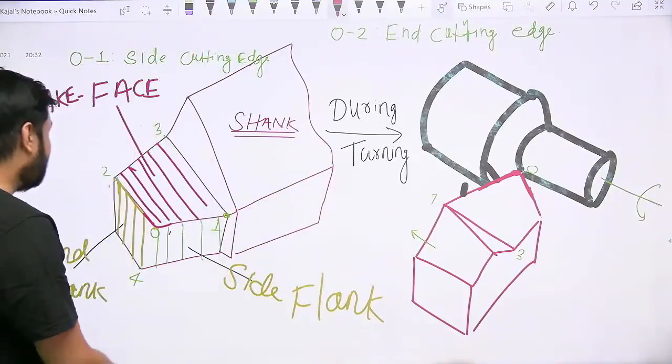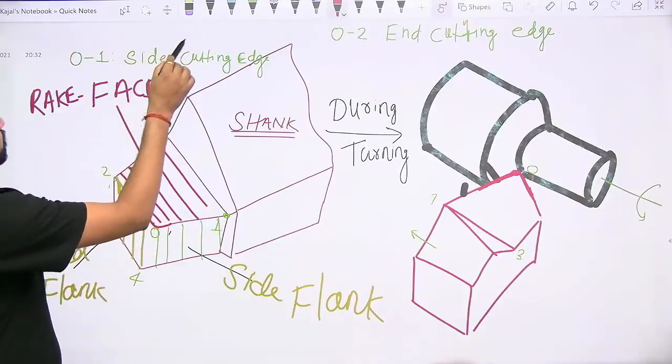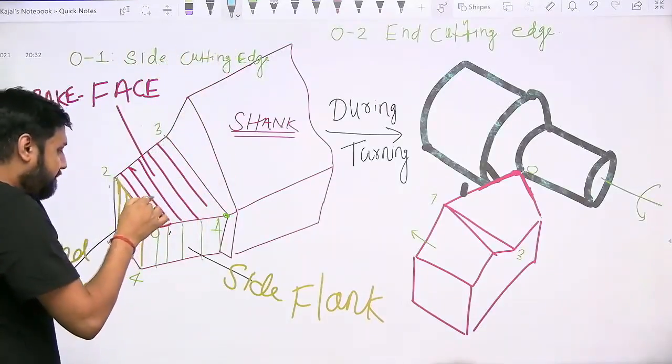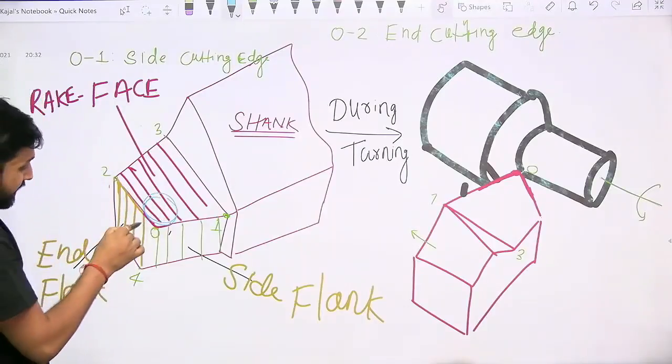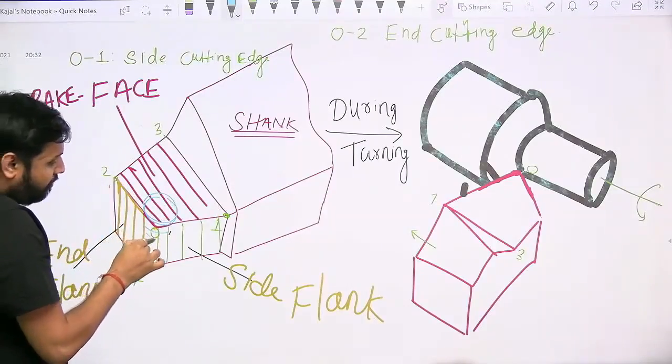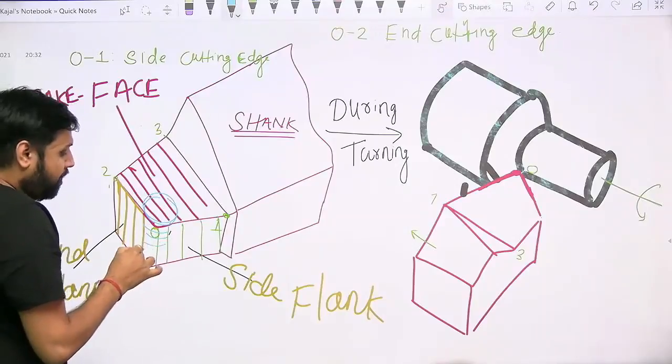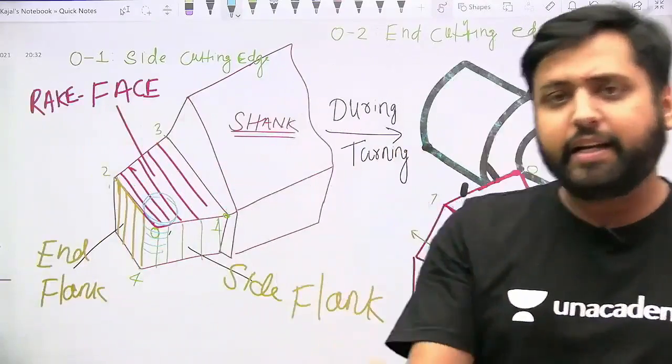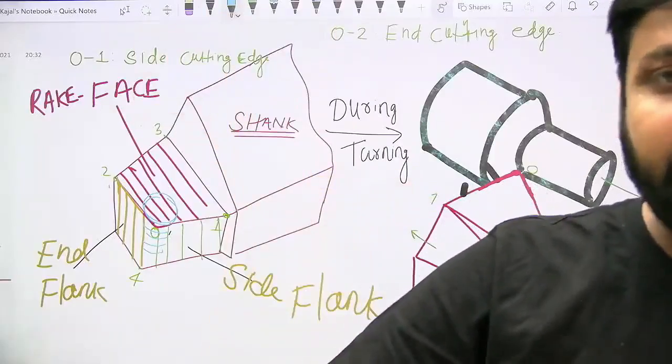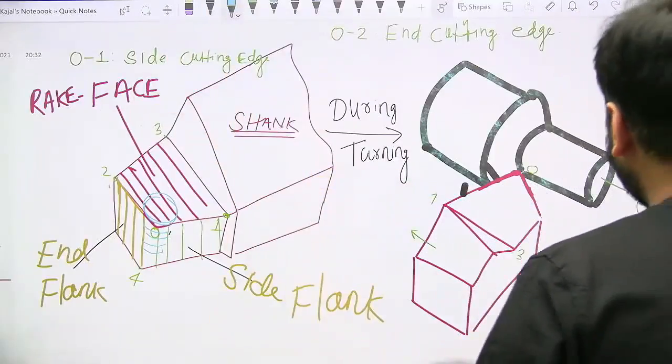That's why, my dear, this tip of the tool is never, ever made sharp. It is always given certain radius of curvature. And this radius of curvature of the tip of the tool is what we call as nose radius.